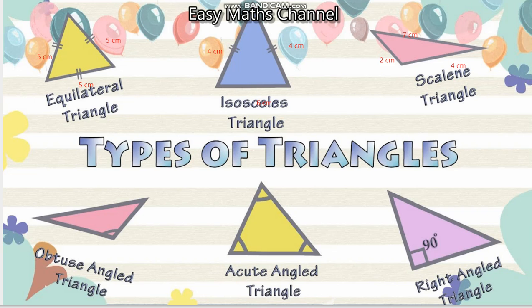Next, this is called angle-based classification. Obtuse angle, acute angle, and right angle triangle. Obtuse angle means one of the 3 angles is obtuse — more than 90 and less than 180 degrees. For example, 110 degrees is more than 90 and less than 180. The sum of 3 angles is 180 degrees.